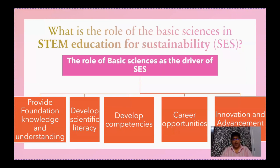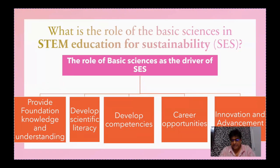As far as foundational knowledge and understanding is concerned, the basic sciences — which includes physics, chemistry, and biology — are primordial for STEM education for sustainability. Basic sciences provide the foundational knowledge and understanding of how the natural world works, the interaction between biotic and abiotic factors within an ecosystem, the importance of addressing environmental challenges for a sustainable future, and the different concepts of sustainability. STEM fields — science, technology, engineering, and mathematics — are based on principles and concepts from physics, chemistry, biology, and mathematics. Without this foundational knowledge and understanding, no STEM initiative is possible.